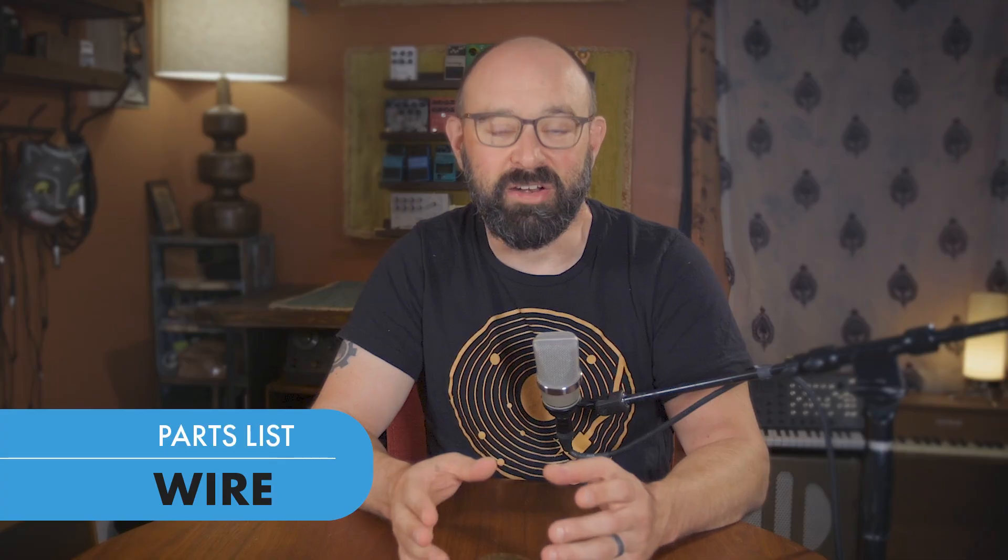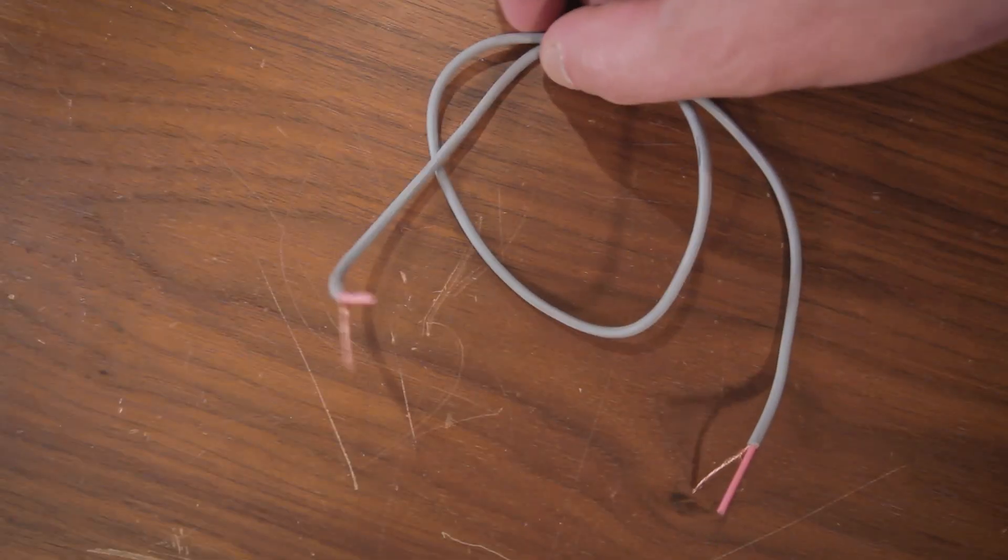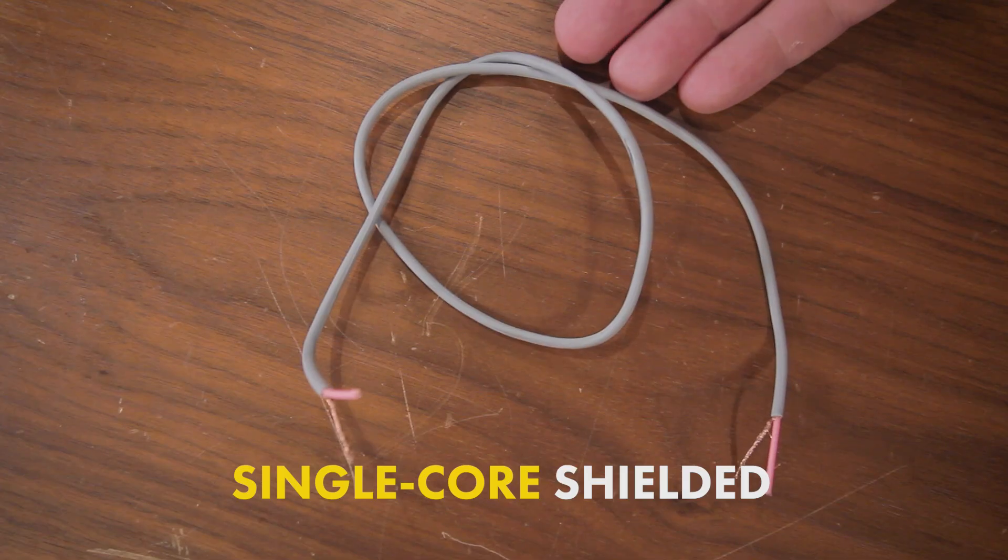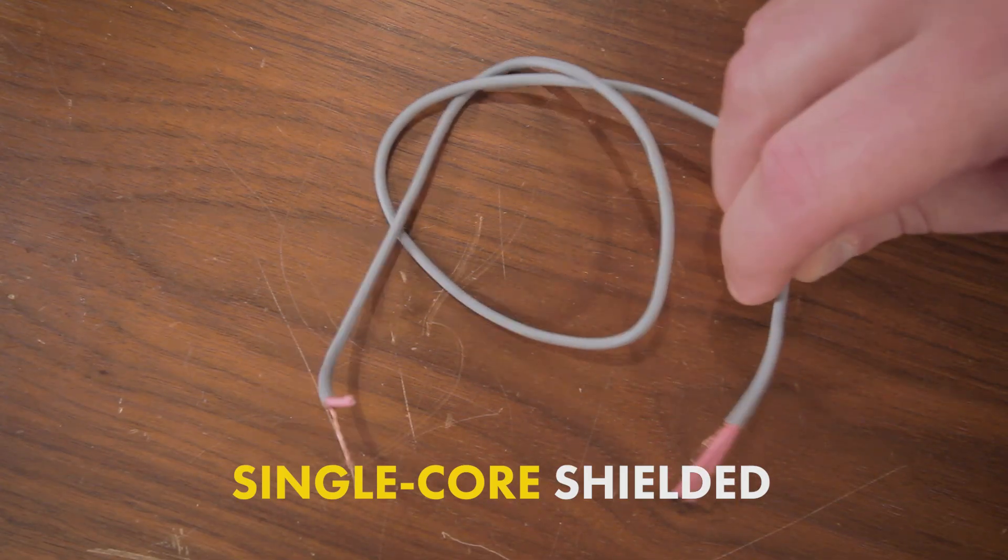Which brings us to the next supply that you'll need to buy. Wire. Now wire comes in all kinds of different types. But my current favorite is this single core shielded wire. It's super flexible and it's lightweight, which is perfect for contact microphones.